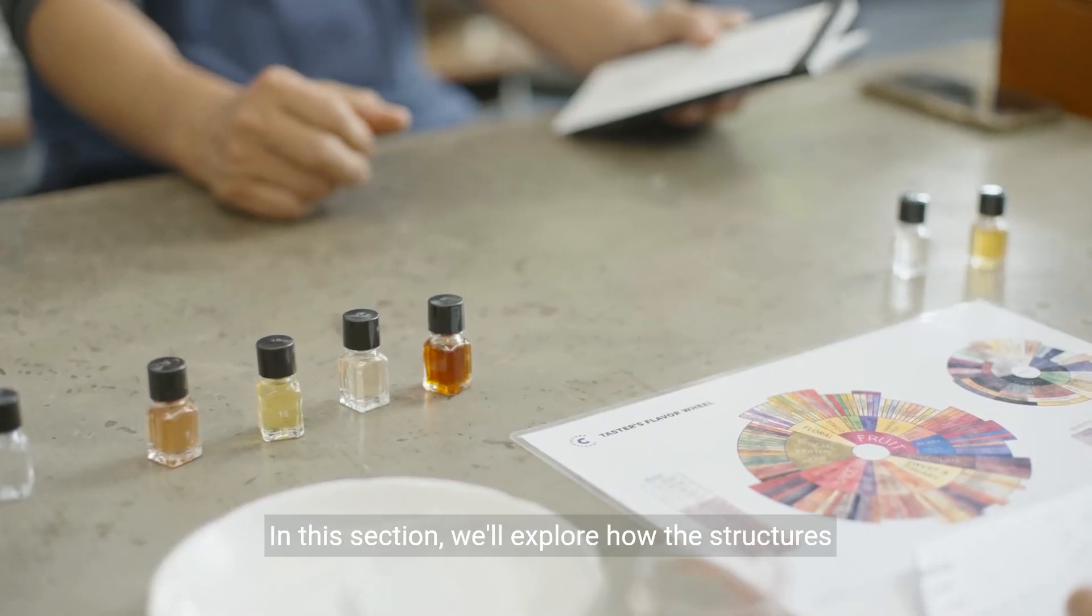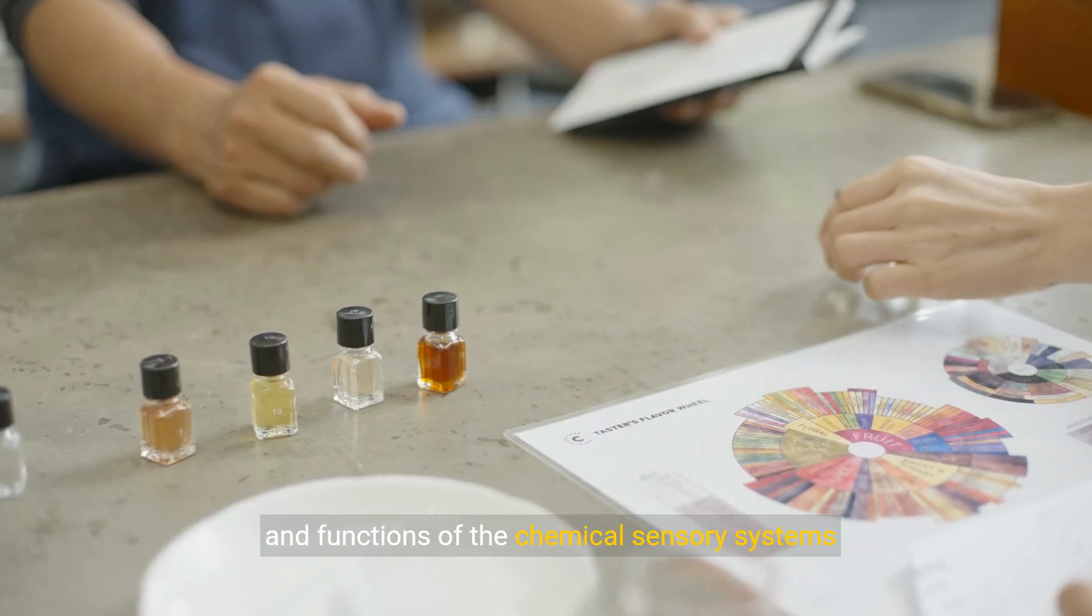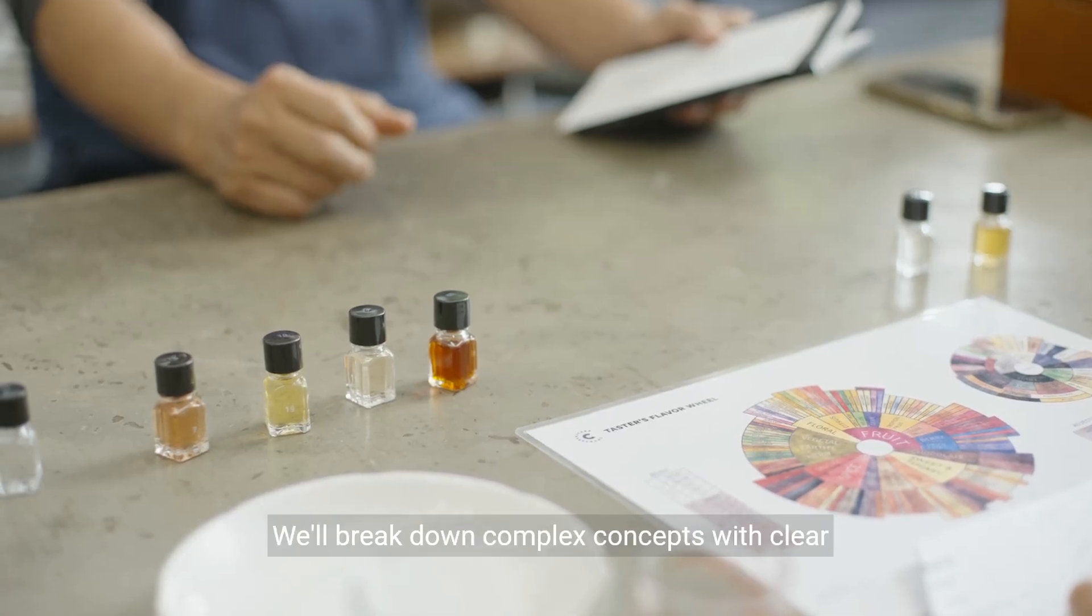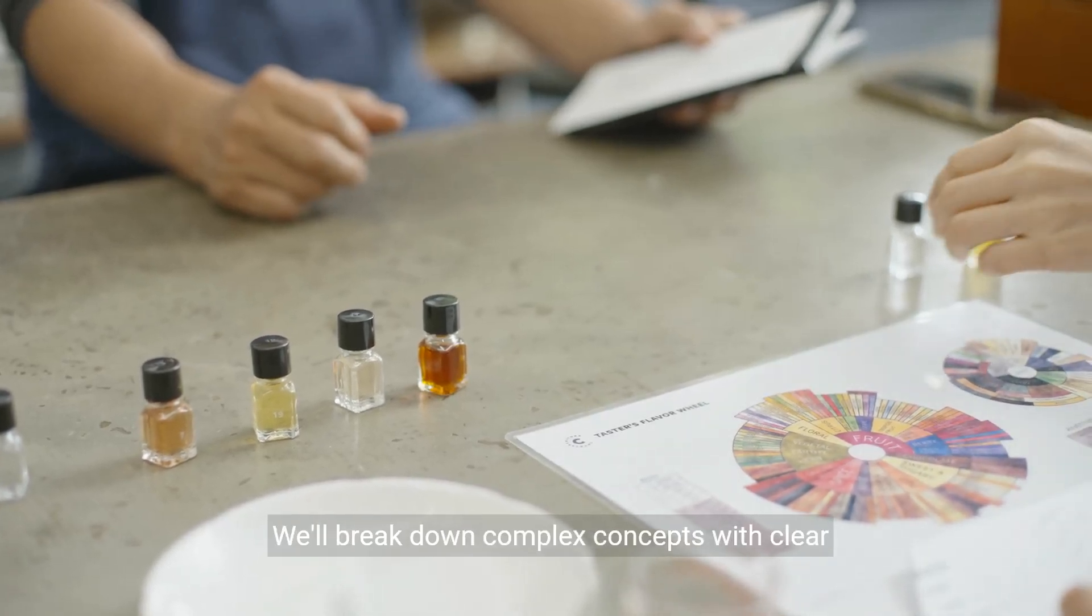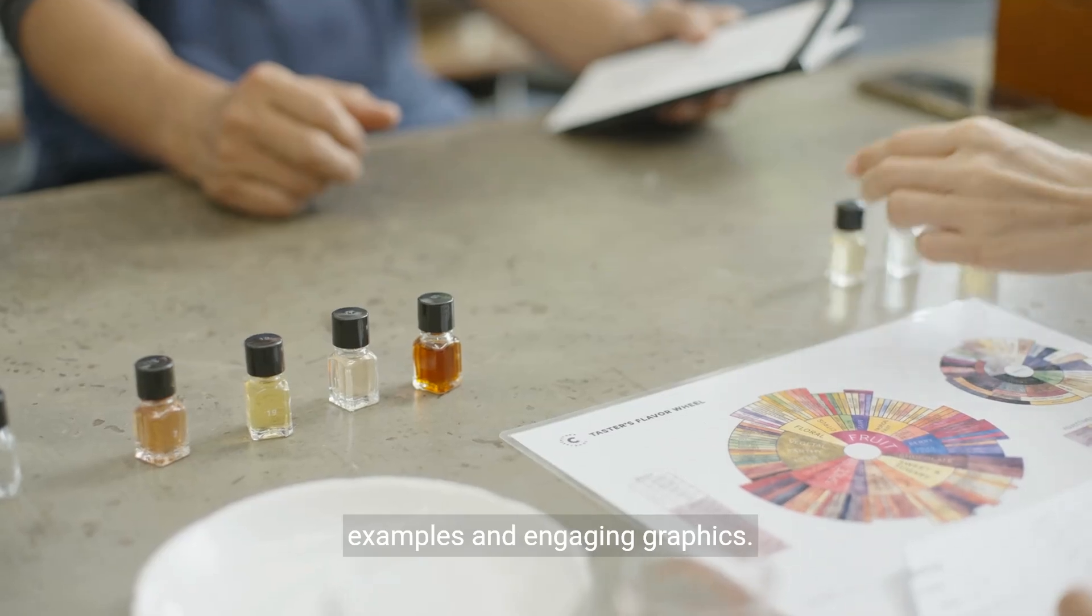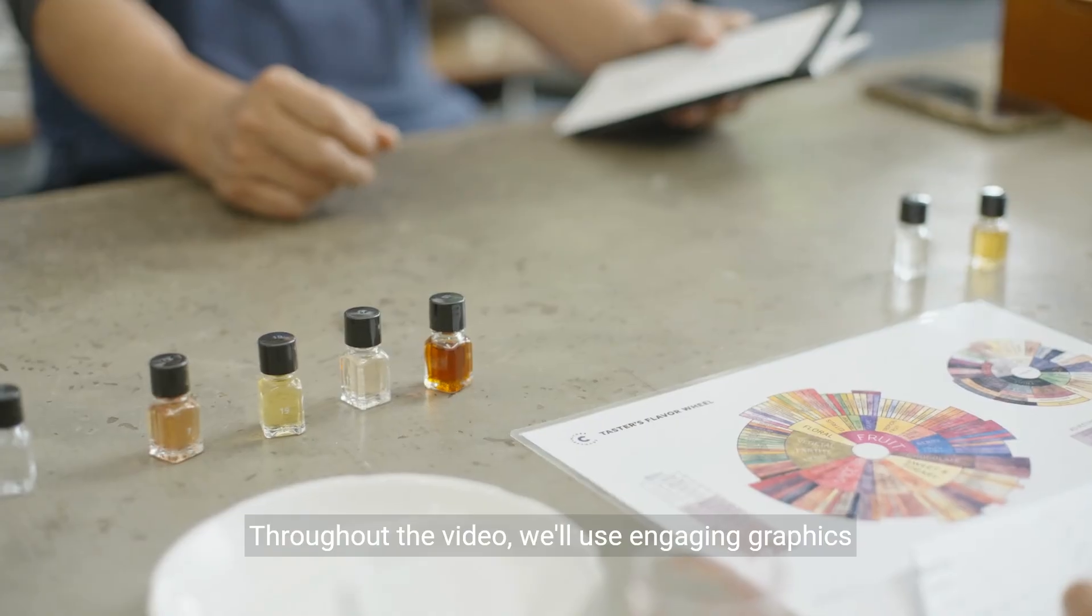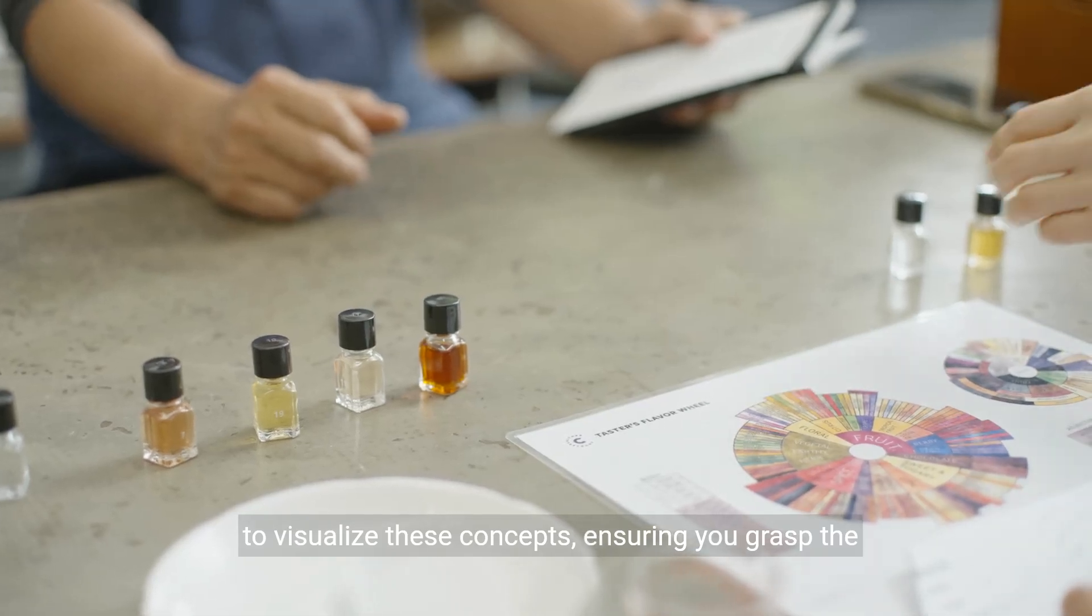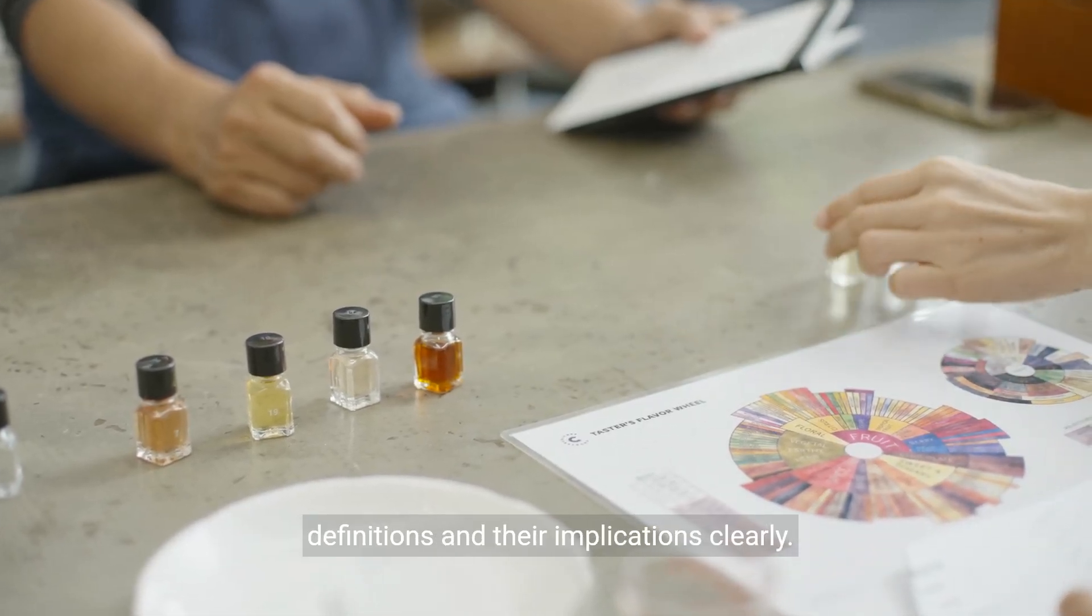In this section, we'll explore how the structures and functions of the chemical sensory systems relate to behavior and mental processes. We'll break down complex concepts with clear examples and engaging graphics. Throughout the video, we'll use engaging graphics to visualize these concepts, ensuring you grasp the definitions and their implications clearly.